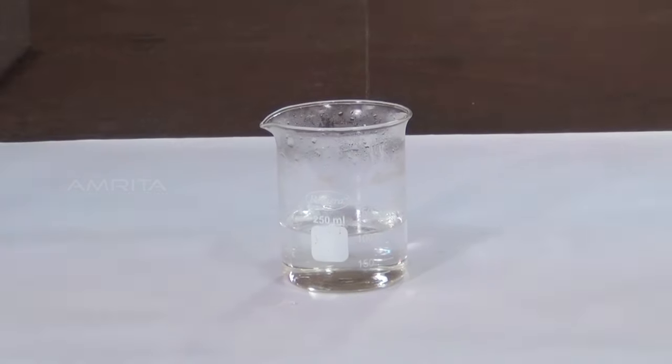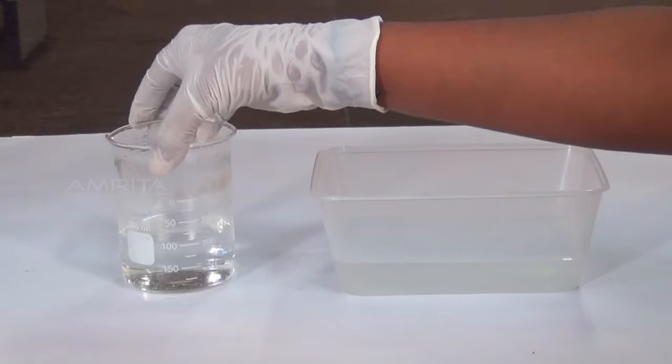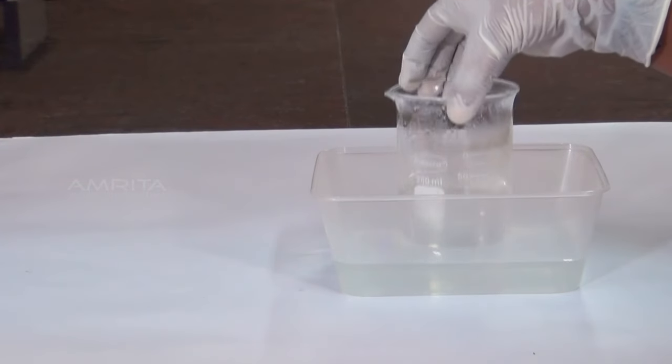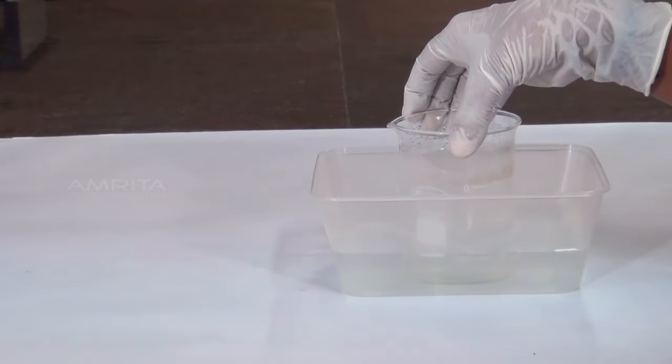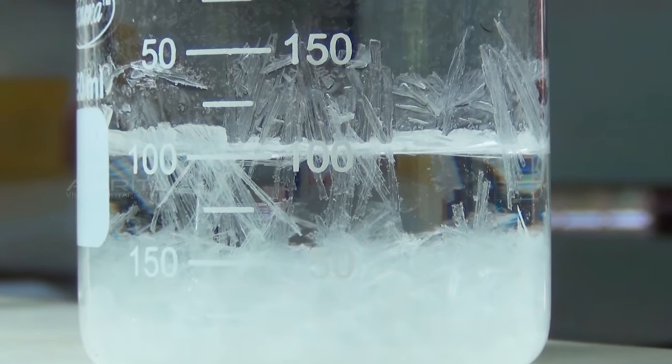Cooling the hot saturated solution. Let the filtrate come to room temperature by itself. Cool it by placing the beaker in the trough containing cold water. As the solution cools, white crystals of benzoic acid begin to separate.